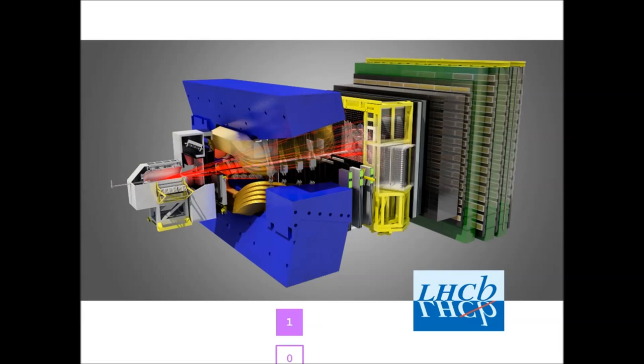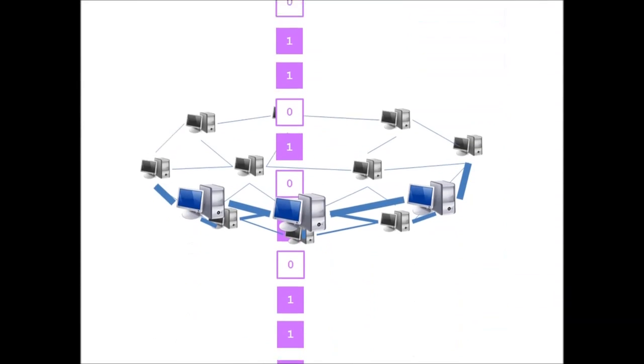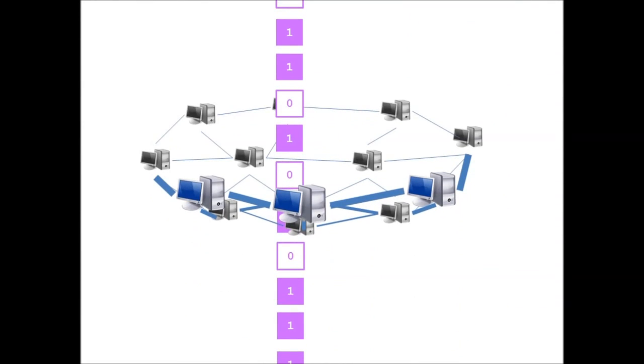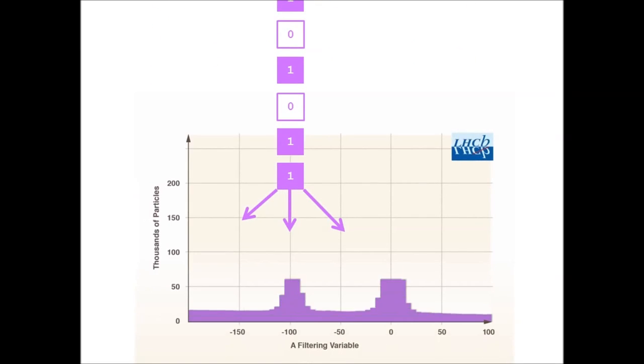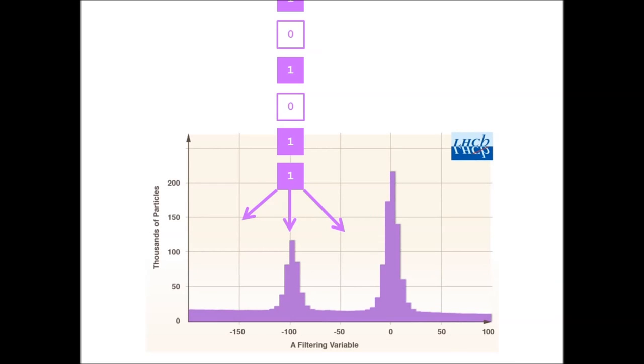We start with the huge amount of data from the LHCB experiment, and filter out as much of the background noise as we can using a massive network of computers all around the globe. This graph shows the results of a whole year of data-taking. And it has two different peaks which come from two different particles called B0 and BS0.